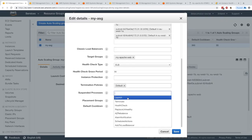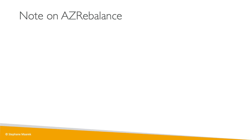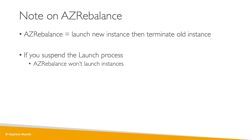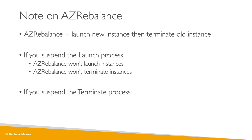Remember these suspend processes — especially Launch, Terminate, Health Check, Replace Unhealthy, and AZ Rebalance. AZ Rebalance triggers when there's an imbalance across availability zones — for example, one AZ has five instances, another has one, another has zero. It rebalances by launching new instances first and then terminating the old ones. If you suspend the Launch process, the ASG can't launch new instances, so AZ Rebalance won't launch or terminate instances, rendering it useless.